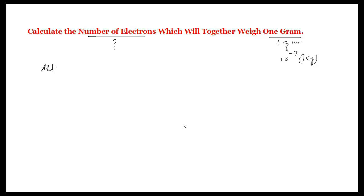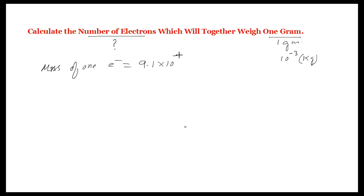As we know, the mass of one electron is equal to 9.1 into 10 to the power negative 31 kilograms. This is the weight of one electron. If we divide the total weight by the weight of one electron, we will get the number of electrons.